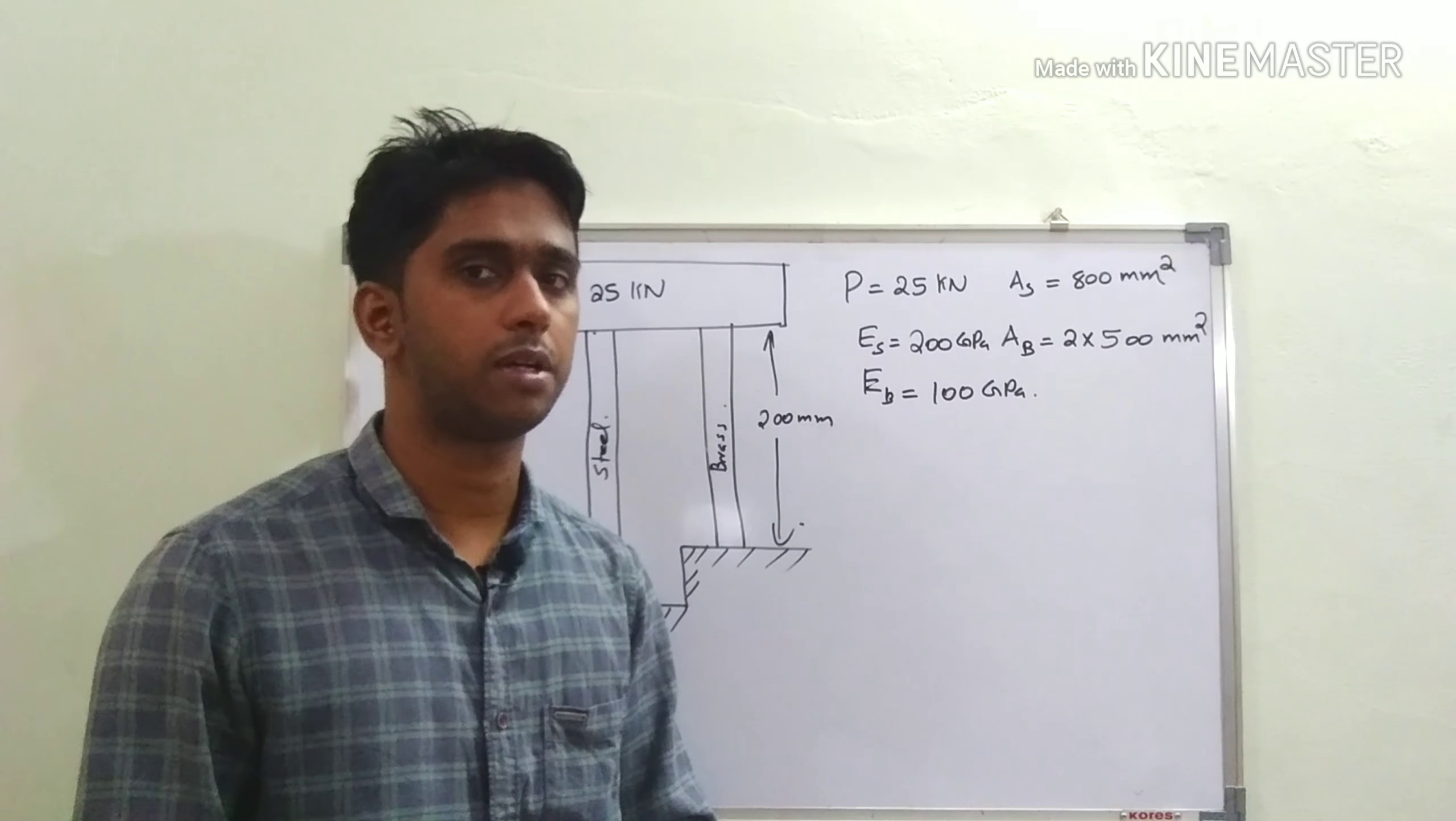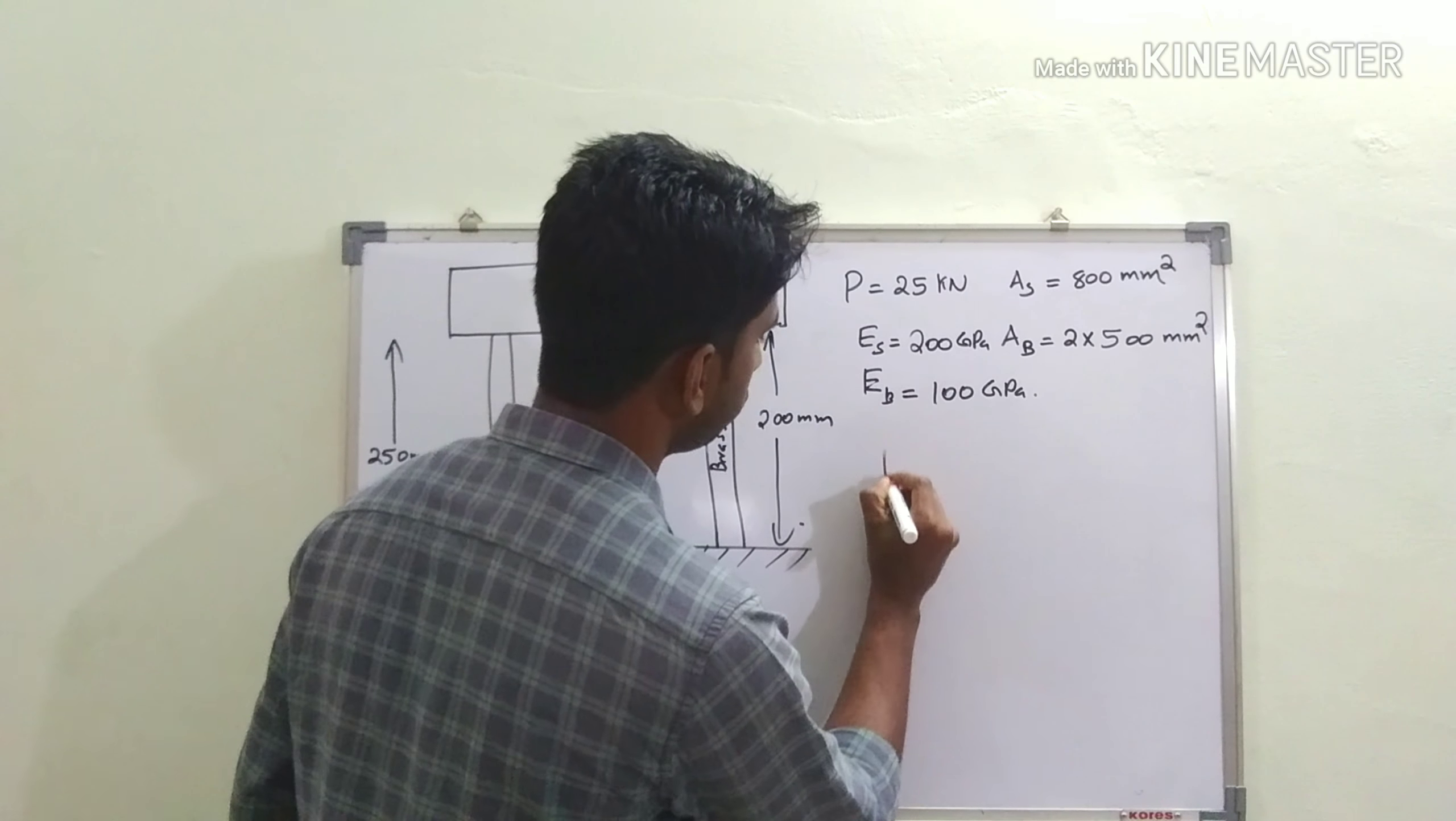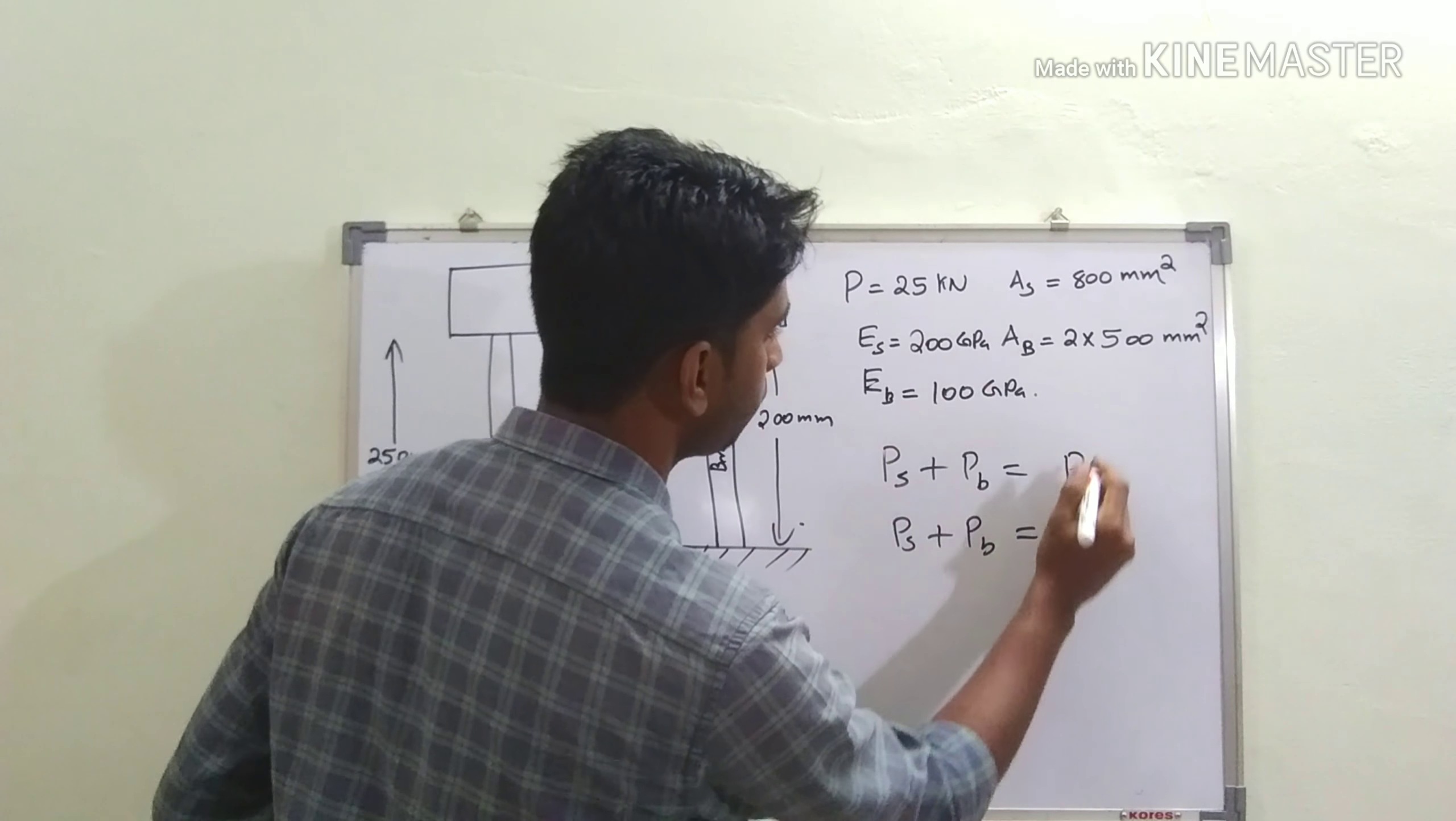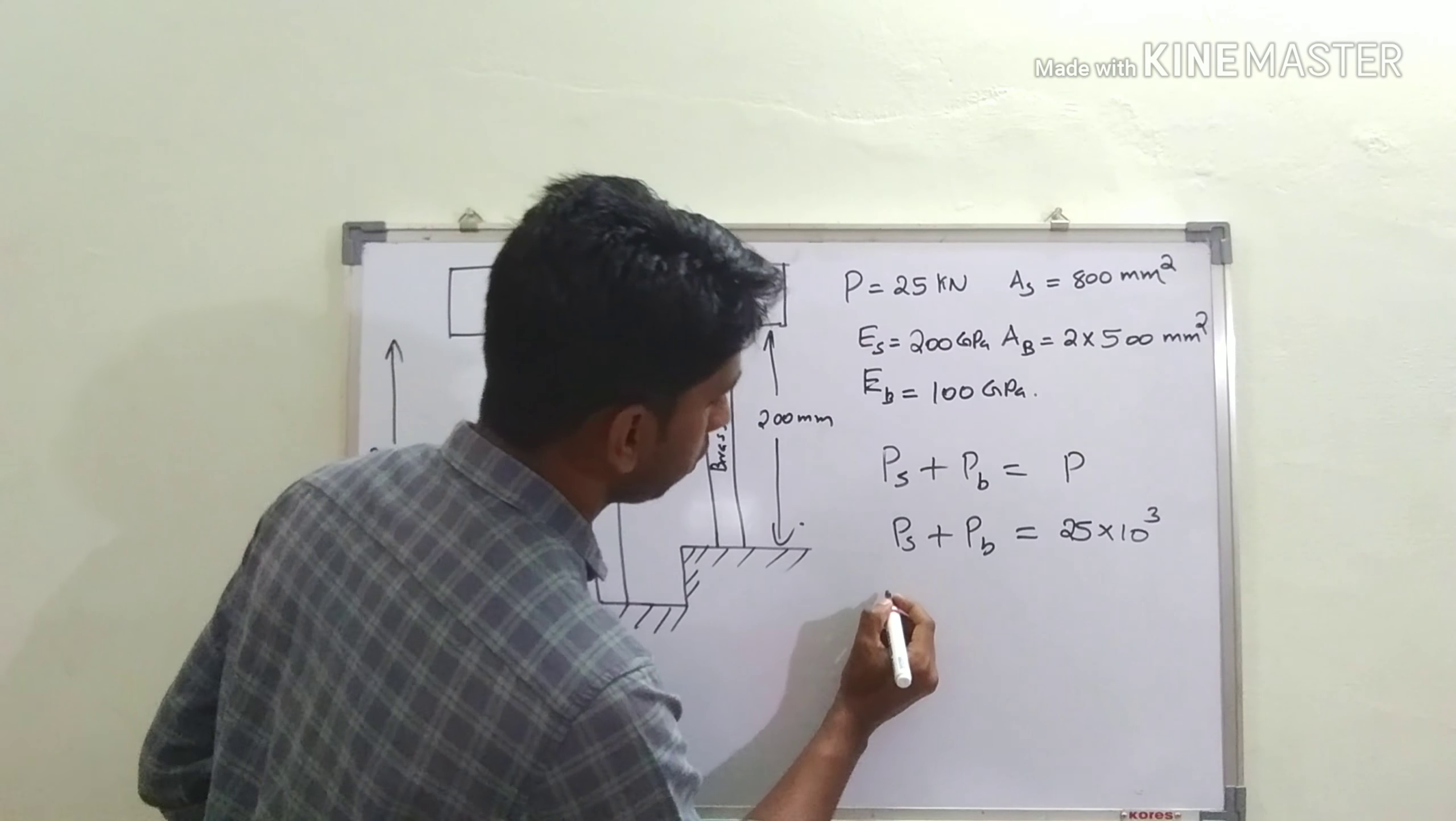Now we write the equilibrium equation and compatibility equation. First, the equilibrium equation: P_steel + P_brass = P. We substitute the values: P_steel + P_brass = 25 kN = 25×10³ N.